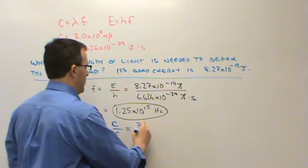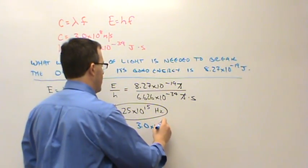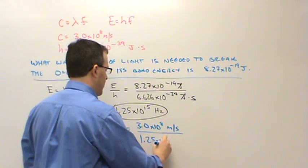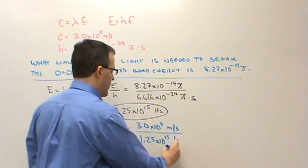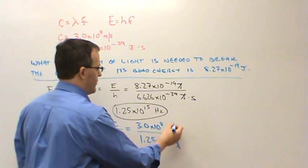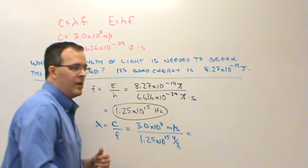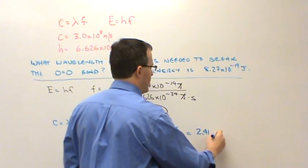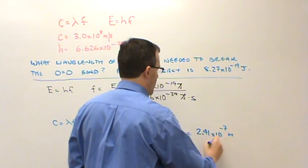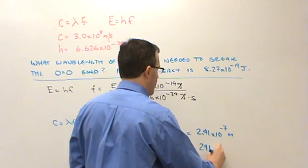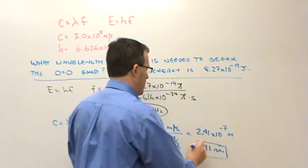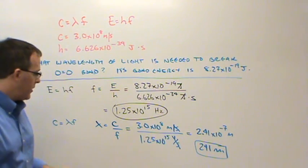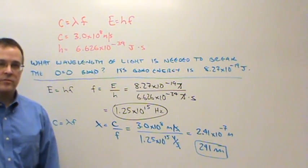So 3.0 times 10 to the 8th meters per second divided by 1.25 times 10 to the 15th, 1 over seconds. That's a hertz. I can cancel those out. That leaves me with meters. And the wavelength here comes out to about 2.41 times 10 to the minus 7 meters or 241 nanometers, which is in the ultraviolet. But there is the result of your calculation.